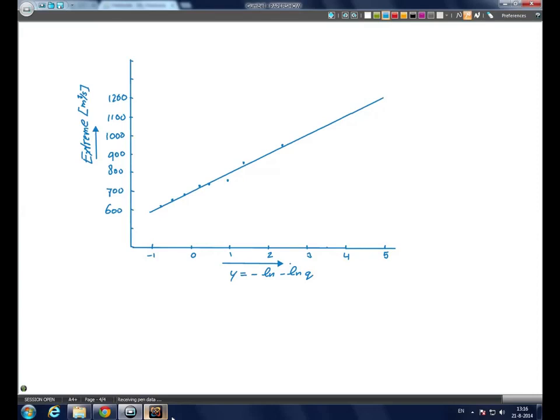This makes it easy to extrapolate to rare events. Note that, in fact, Gumbel applied the transformation of the horizontal axis.